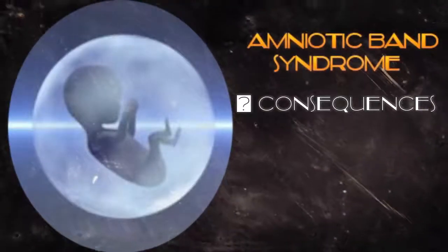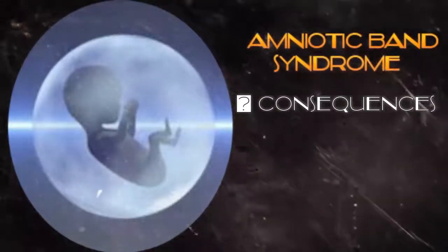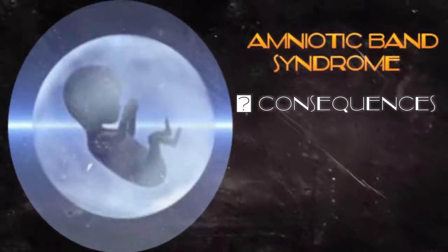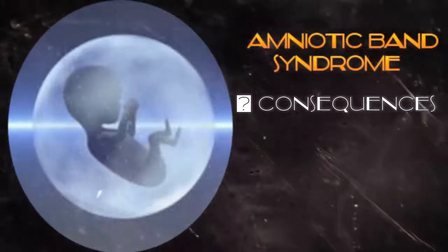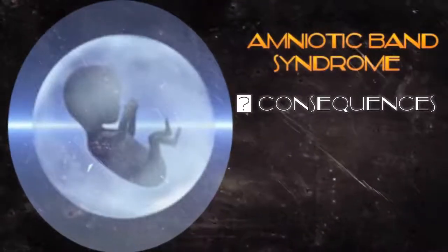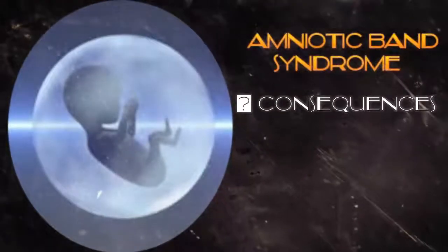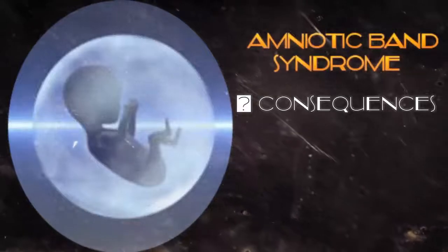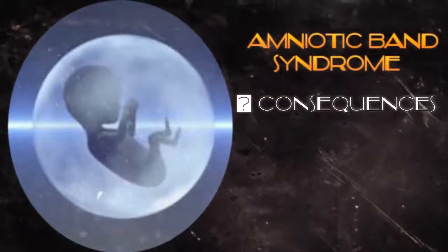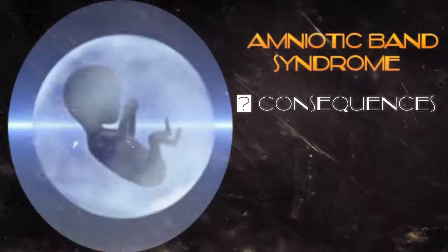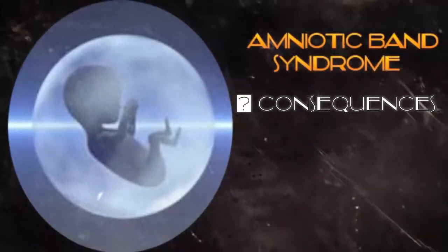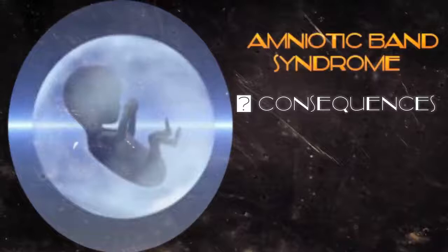If the band is attached to the face or neck, it can cause deformities like cleft lip and cleft palate. Amniotic bands entrapping the head, umbilical cord, or other vital parts may cause severe complications and may even lead to death of the fetus. The deformities caused by amniotic band syndrome depend on the location and extent of constriction. Fortunately, most ABS complications are rectified through reconstructive surgery after birth.